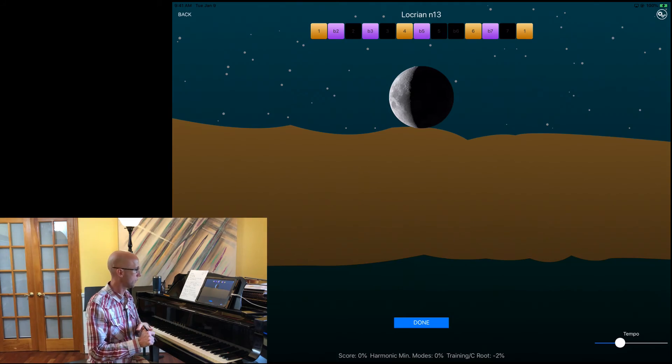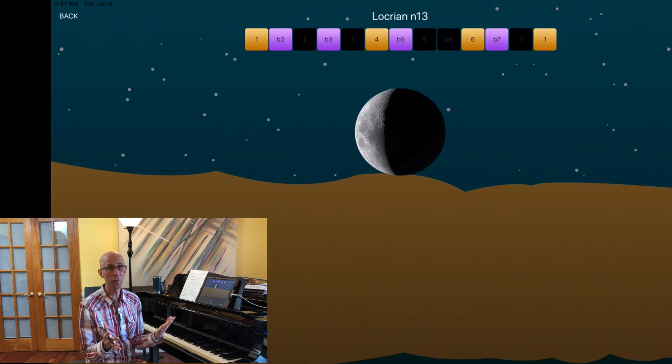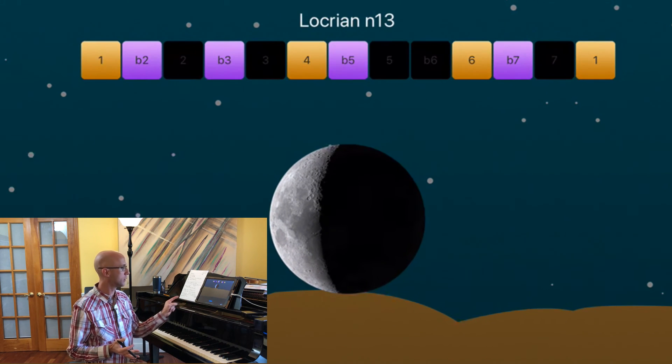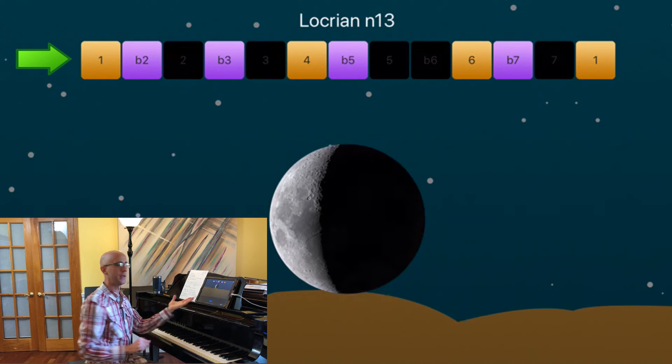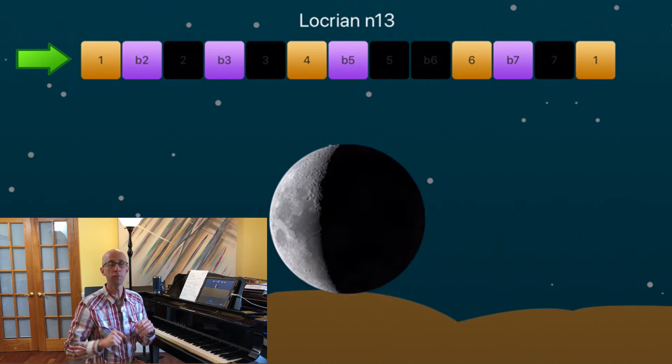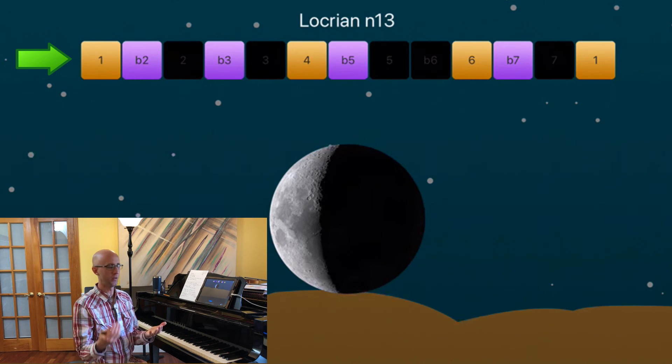Now it's going to do another mode of harmonic minor, which is going to be a bit peculiar. Here we have Locrian Natural 13. If I have no idea what this is supposed to sound like, what I want to do is pay close attention to the formula at the top of the page. It's supposed to have a b2, a b3, and so on, and try to pick out those tones as I'm listening to the example. Through enough repetition of that, hopefully the color of Locrian Natural 13 becomes more apparent to me as I do it.